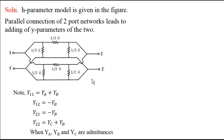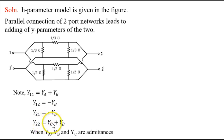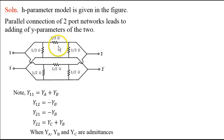For the Y parameters, we know the corresponding expressions: Y11, Y12, Y21, Y22 are related to the admittance values. Y11 is YA plus YB, where this is YA and this is YB. Y12 is minus YB. Similarly, Y21 is minus YB and Y22 is YC plus YB.